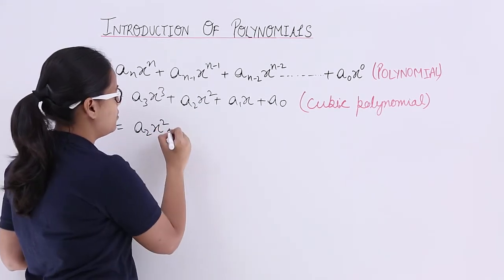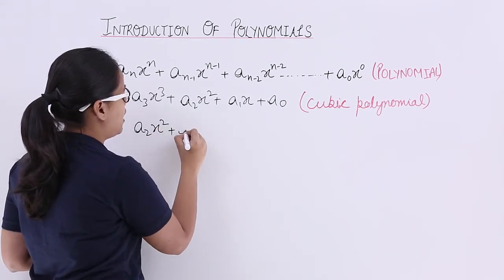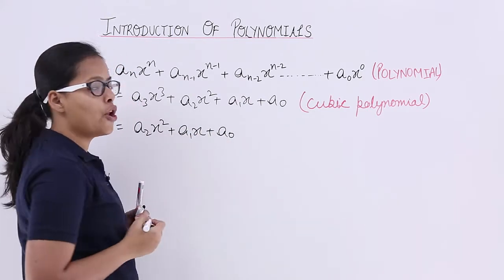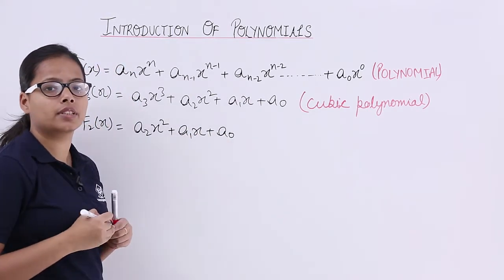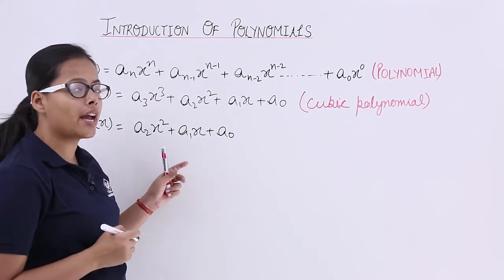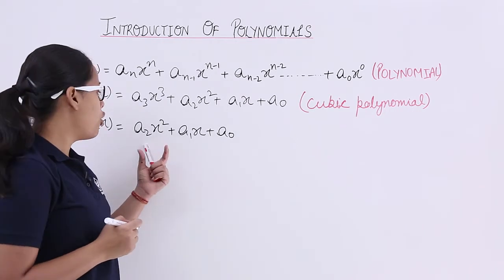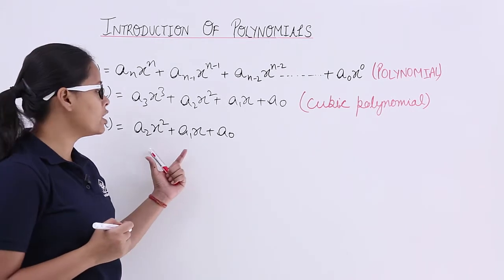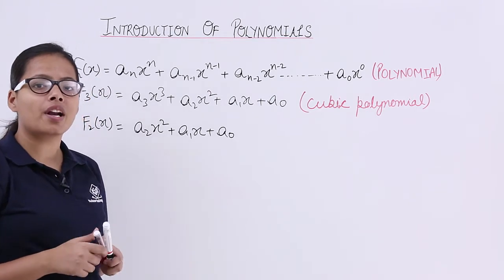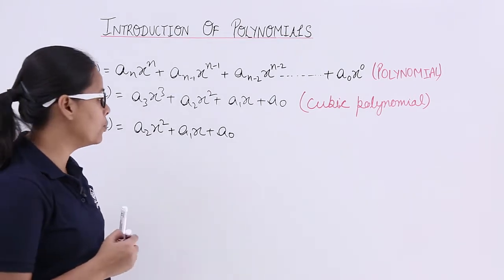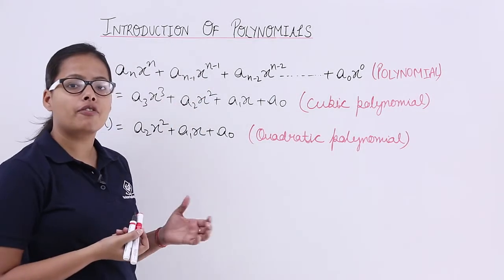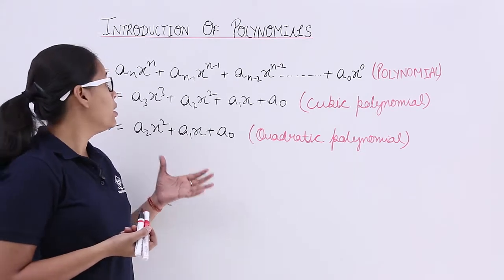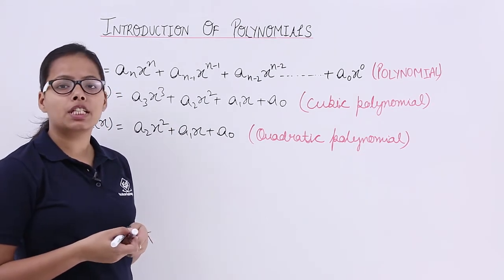For n = 2, the polynomial is a2x² + a1x + a0. As you can see, the highest degree of x is 2, that's why this polynomial will become a quadratic polynomial. And if the value of n becomes 1, then what will be this polynomial?